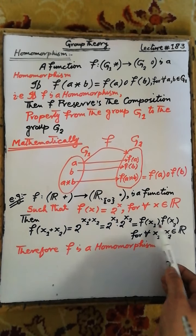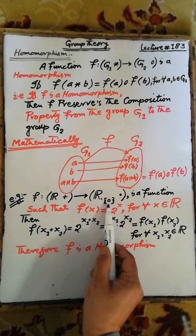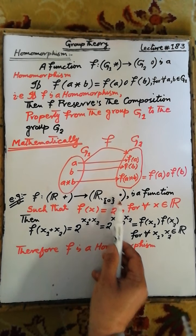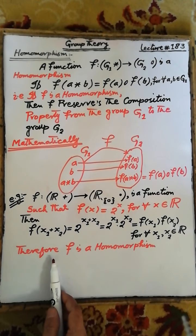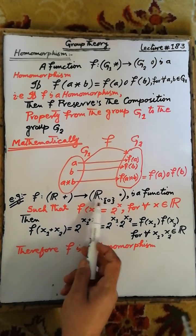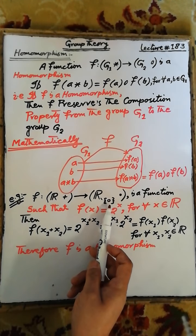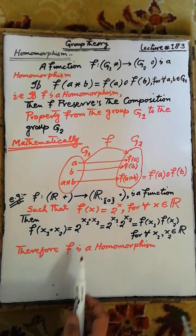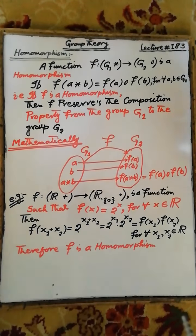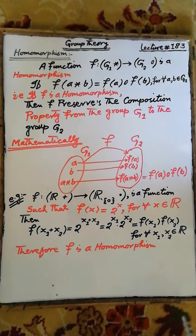The set consists of all real numbers except the element 0, with respect to the binary operation multiplication. Therefore, we can say that the function f from the group ℝ⁺ to ℝ minus {0}, with respect to multiplication, is a homomorphism from ℝ⁺ to ℝ minus {0} with respect to multiplication.